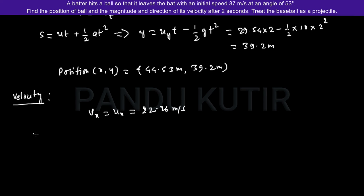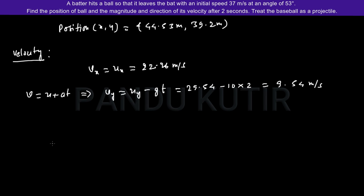To calculate the vertical component of velocity at point P, I choose formula v equals u plus at. I turn this formula into vertical component. So it becomes Vy equals Uy minus gt. Putting the values 29.54 minus 10 times 2 equals 9.54 meters per second.